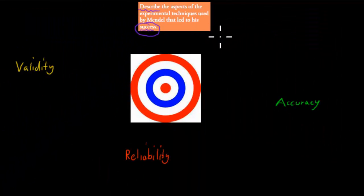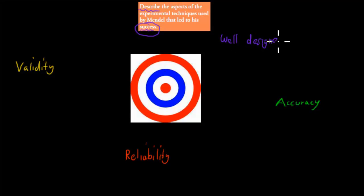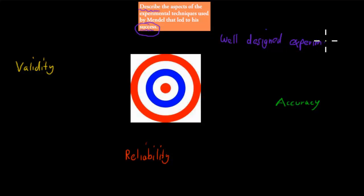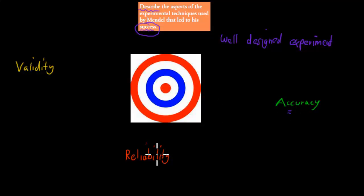Before we start, I want to go over what a well-designed scientific experiment is and what you need to be able to say your experiment was actually quite good. You need to have three concepts incorporated: accuracy, reliability, and validity.